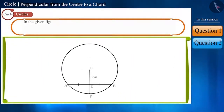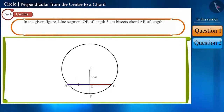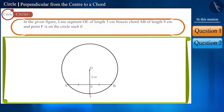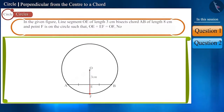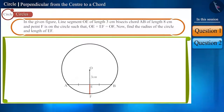In the given figure, line segment OE of length 3 cm bisects chord AB of length 8 cm. Point F is on the circle such that OE plus EF is equal to OF. Find the radius of the circle and the length of EF.